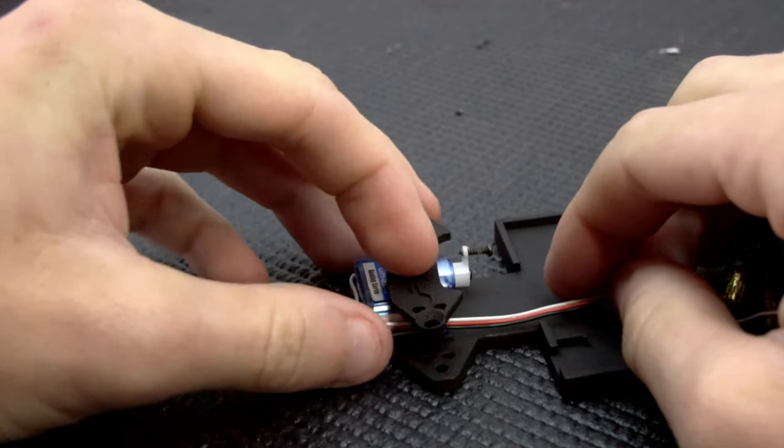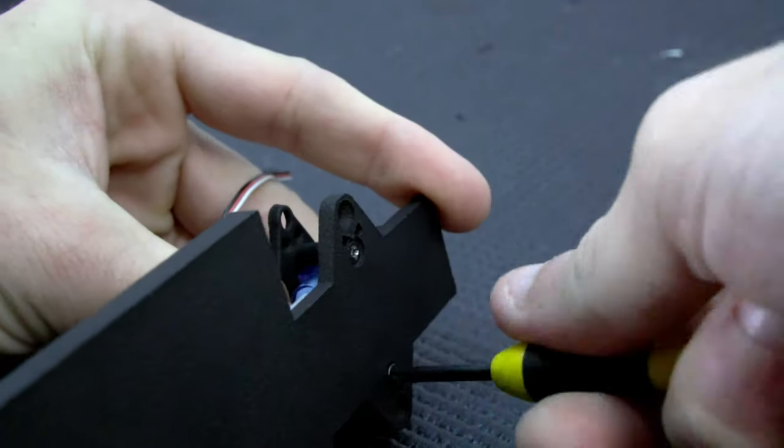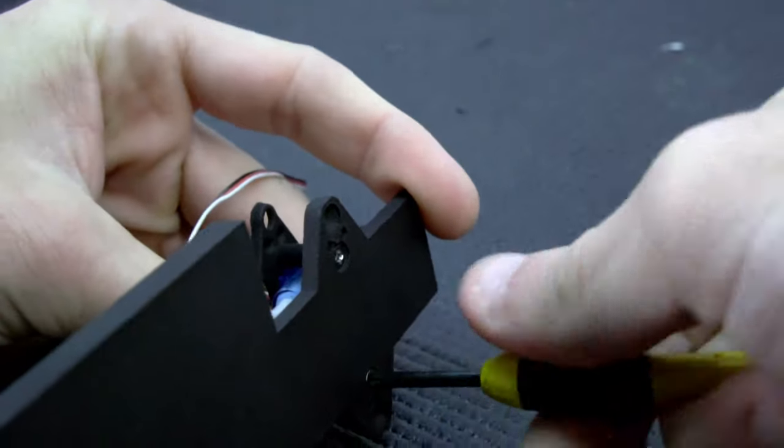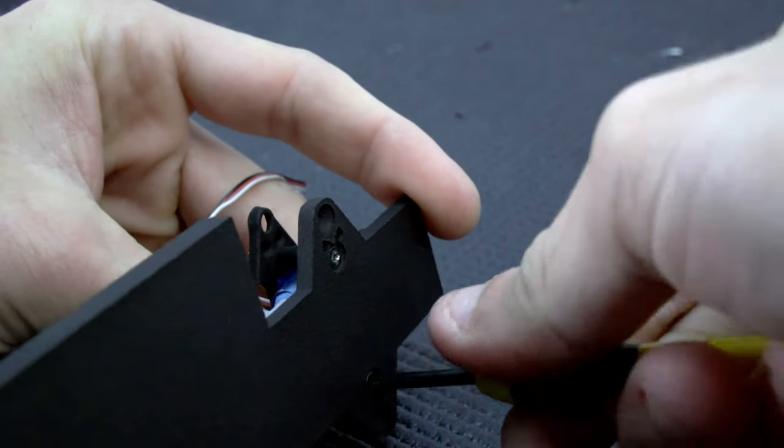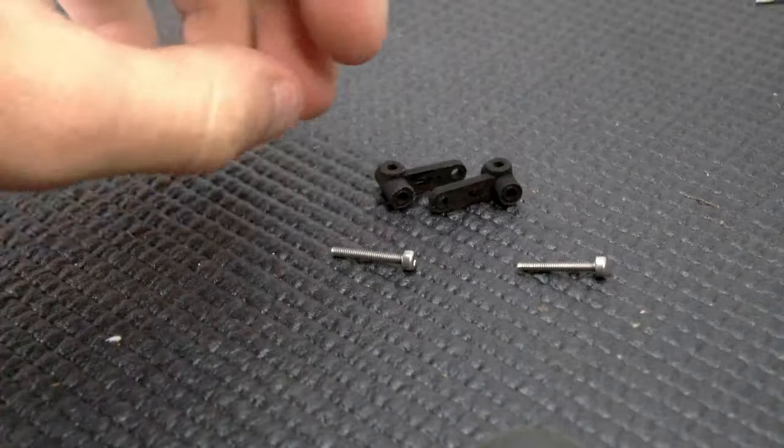The servo can be installed next. The mounting tabs need to be cut off the servo, and then I use some double-sided tape on the bottom before securing it with the upper mount with two more M3 screws.